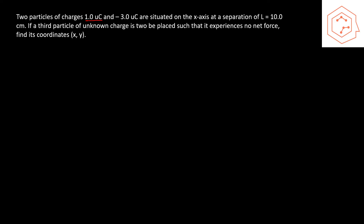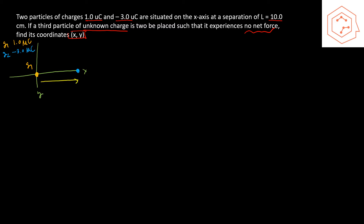Now we can do an example. We have two particles of charges 1 microcoulomb and −3 microcoulombs situated on the x-axis with a separation of 10 centimeters. Drawing a diagram with our axes, I'll place q1 at the origin — q1 is 1 microcoulomb — and q2 a little to the right, which is −3 microcoulombs. Their separation is l = 10 centimeters.